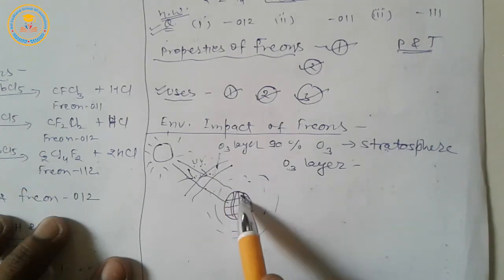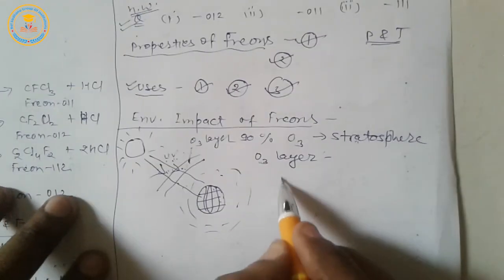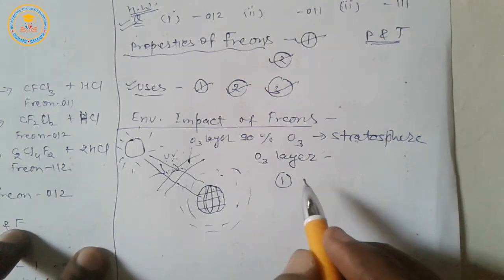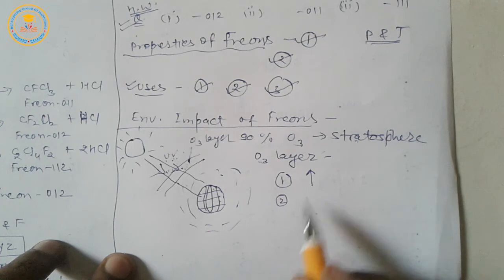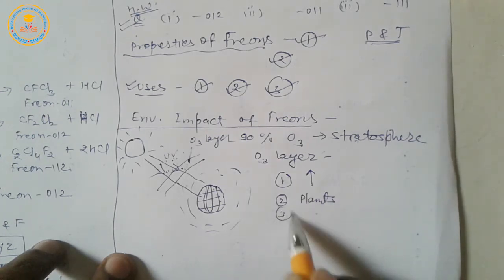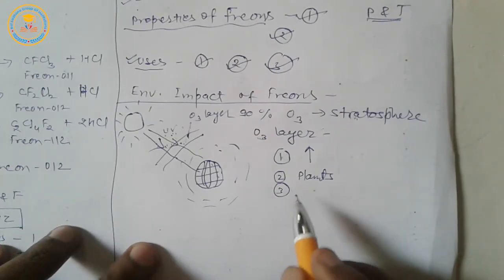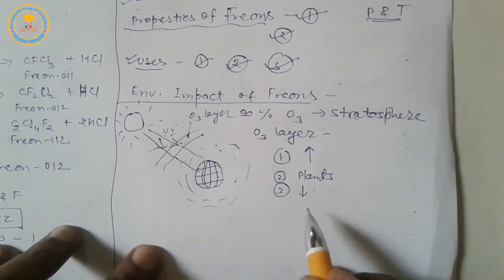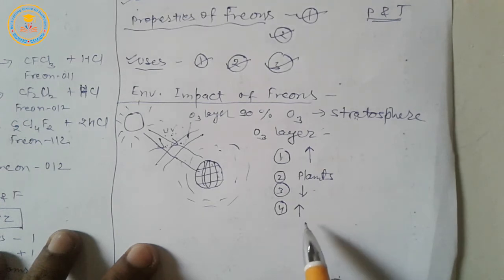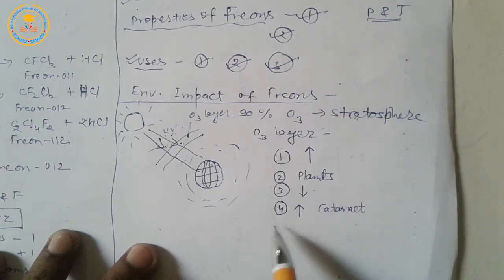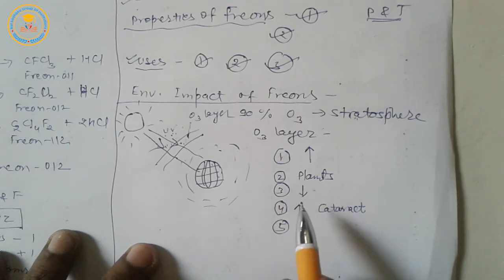Excess of ultraviolet radiation creates the following harmful effects. First, increase in skin cancer. Second effect is damage of plants. Third harmful effect is it decreases the immunity of human beings. Fourth, increase in disease of eyes known as cataract. Fifth, decrease in population of plankton in photic zone of sea.